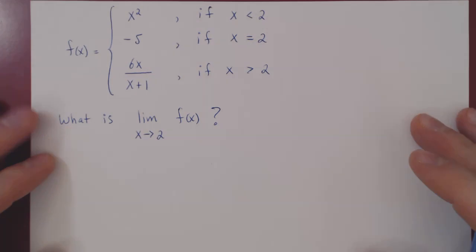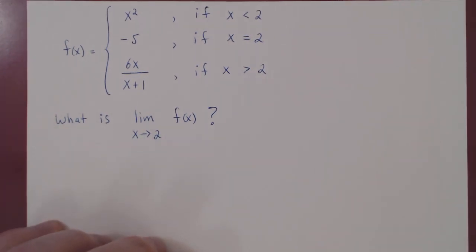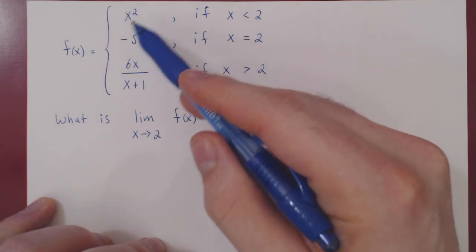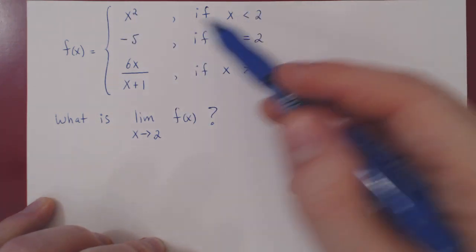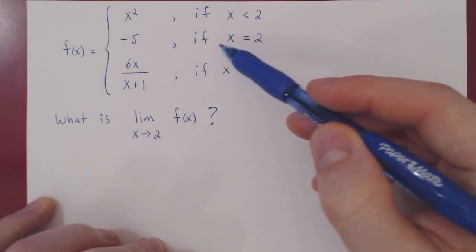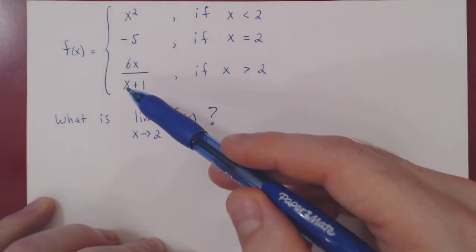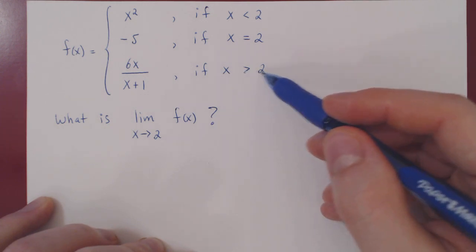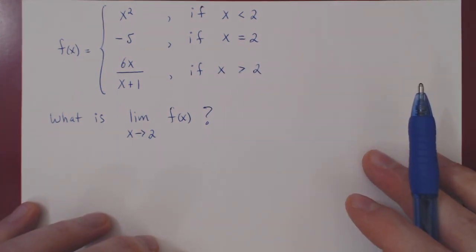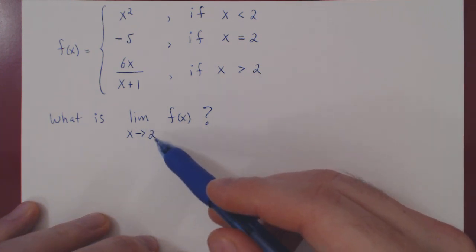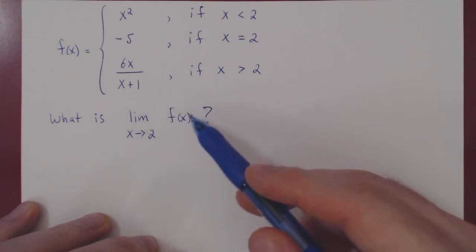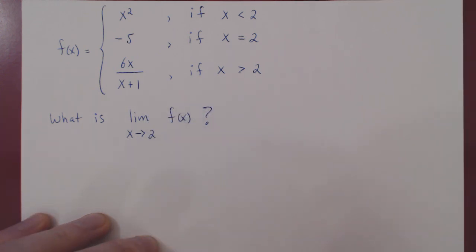Let's consider one other short example. Now we are piecing three different functions together. f of x is x squared whenever x is smaller than 2; f of x is exactly negative 5 when x is exactly 2; and f of x is 6x over x plus 1 when x is larger than 2. The question is the same as before: what is the limit of f of x as x approaches 2?